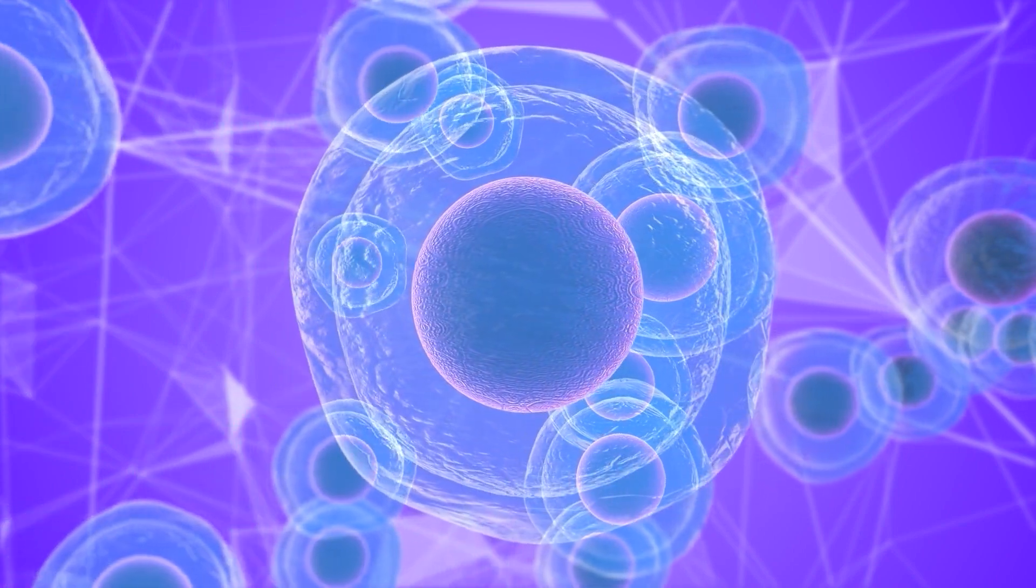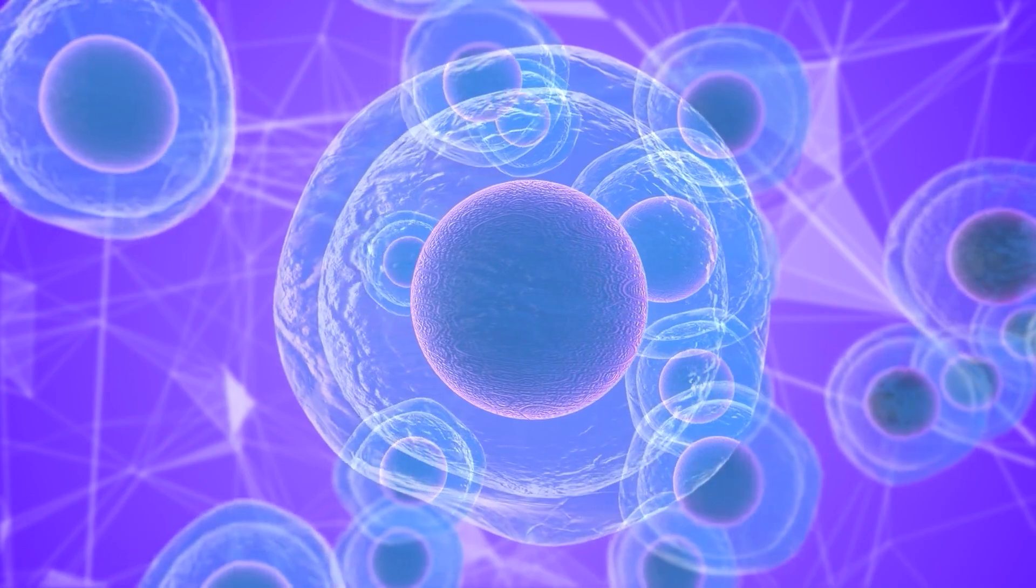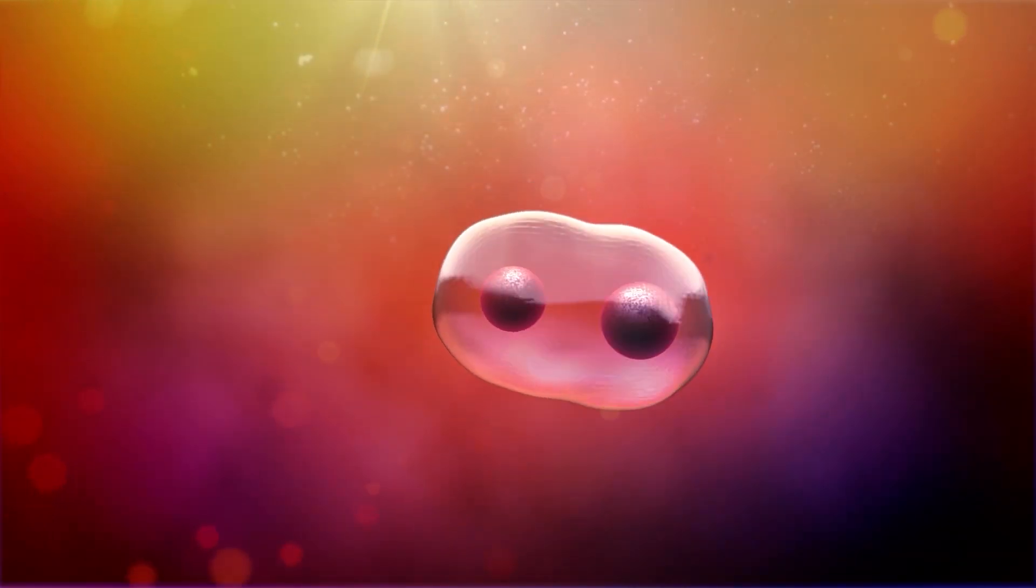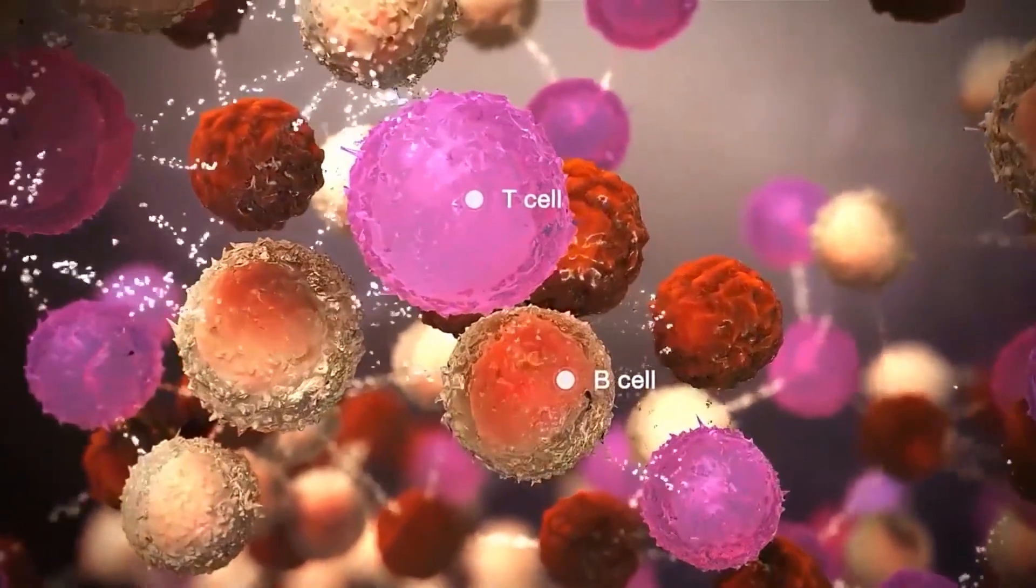Some of the stem cells will become a type of immune system cell called a lymphocyte. Two types of lymphocytes comprise the adaptive immune system, B cells and T cells.